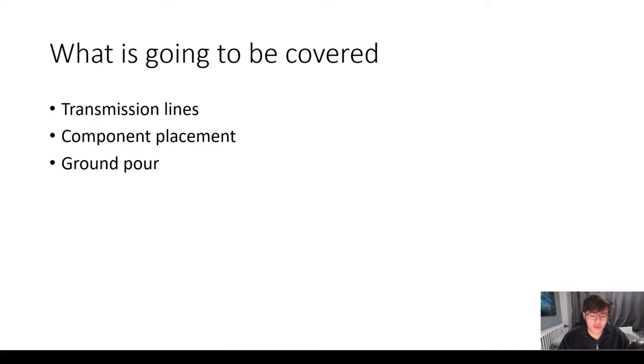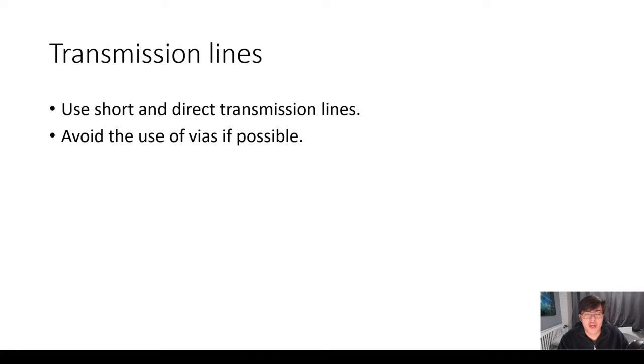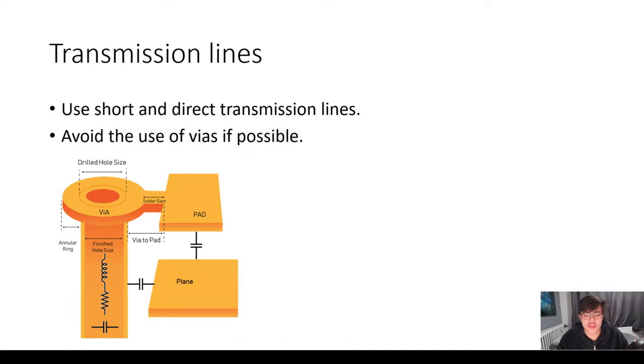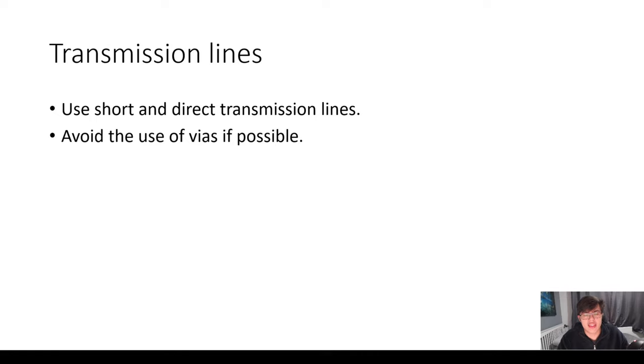This is what's going to be covered and let's get into it. Transmission lines - we're starting off with: use short and direct transmission lines. This is just standard thing, try and keep your traces as short as possible. Do not try to route something from one end of the board to another - it's inefficient, it's not ideal. This of course goes through all signals, but if you really can't do anything then it's unavoidable, but always keep that in mind. Avoid the use of vias if possible. So vias - with the introduction of a via you will have induced capacitance and inductance, and of course transferring an RF signal through that might have some issues.